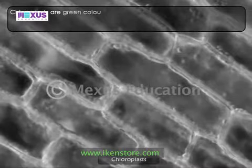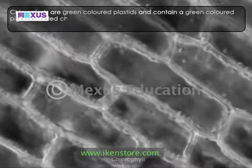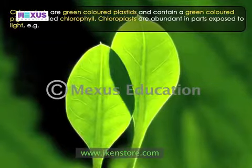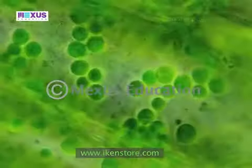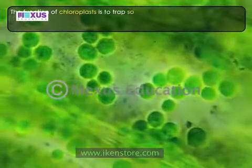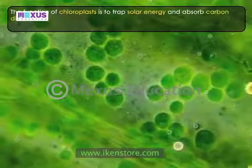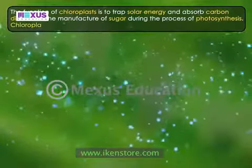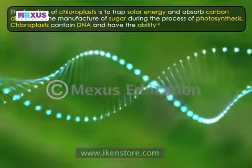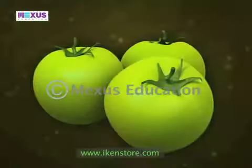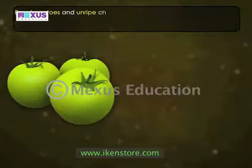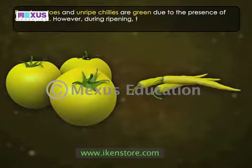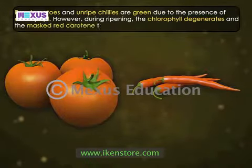Chloroplasts are green-colored plastids and contain a green-colored pigment called chlorophyll. They are abundant in parts exposed to light, such as leaves. The function of chloroplasts is to trap solar energy and absorb carbon dioxide for the manufacture of sugar during the process of photosynthesis. Chloroplasts contain DNA and have the ability to divide. Raw tomatoes and unripe chilies are green due to the presence of chlorophyll; however, during ripening, the chlorophyll degenerates and the masked red carotene takes over.